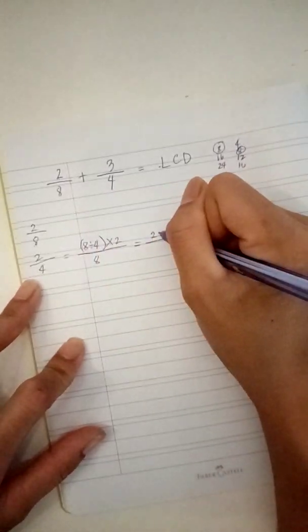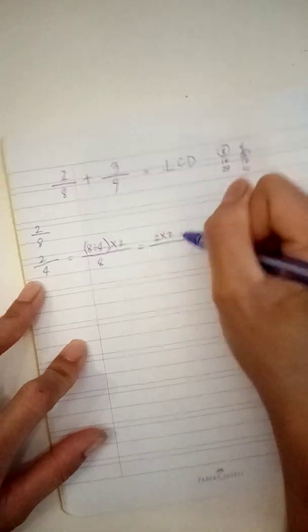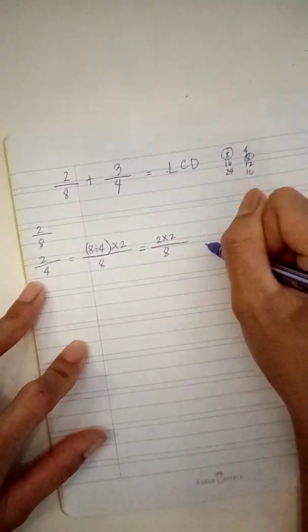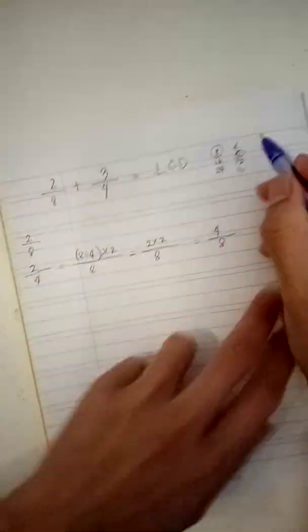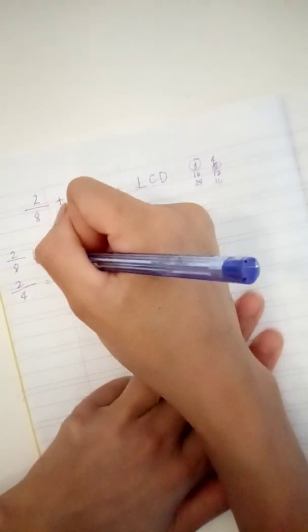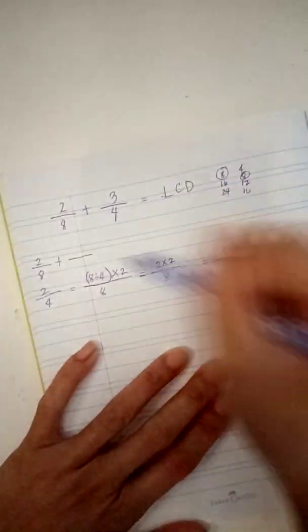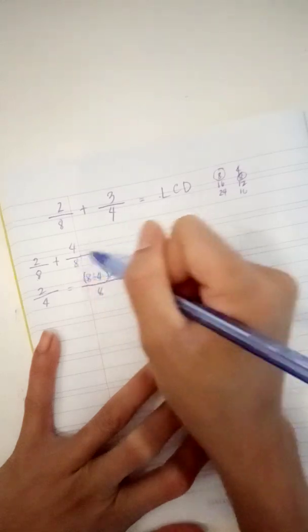Eight divided by four times two. Eight divided by four, two times two over eight equals four over eight. So we can proceed here, like this, four over eight.